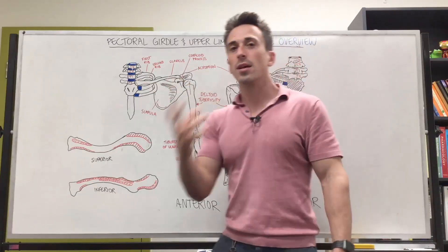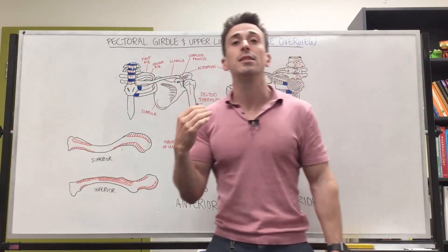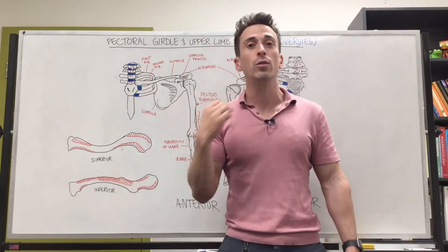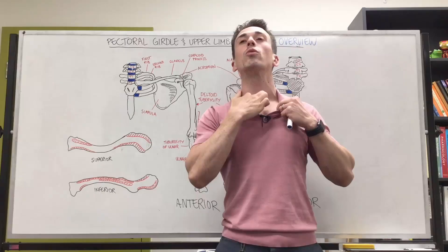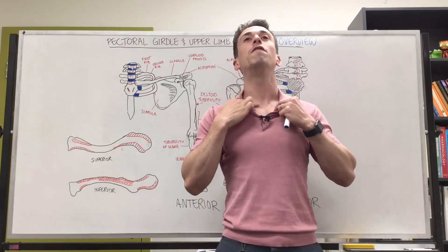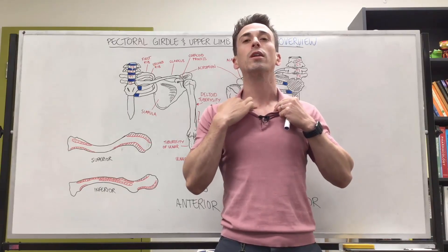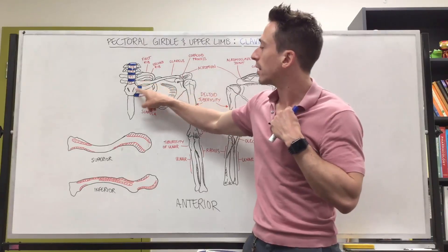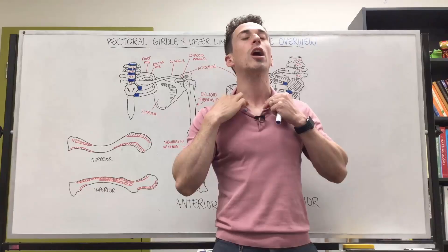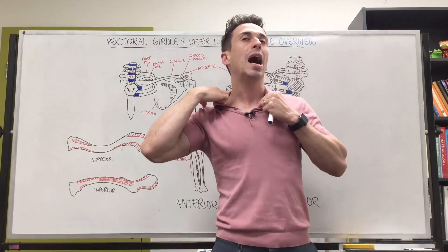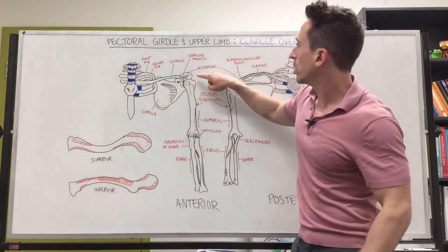Now, the clavicle is subcutaneous. That means it sits just under the skin, and you can actually palpate or feel the clavicle. You can go to the midline, and you can see the suprasternal notch or the jugular notch, and you can feel the most medial portion of the clavicle. So this is going to be where it articulates with the manubrium here of the sternum.